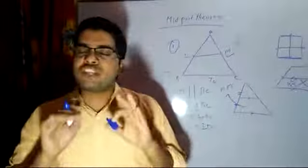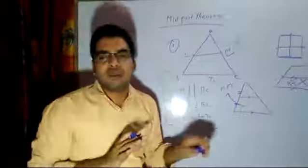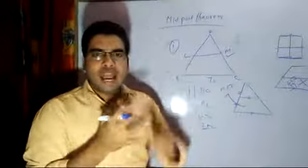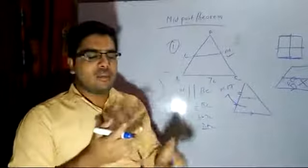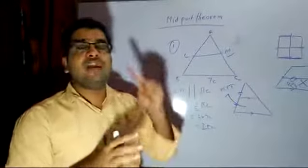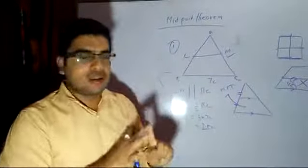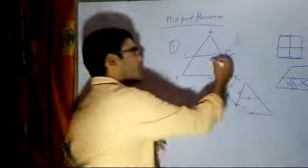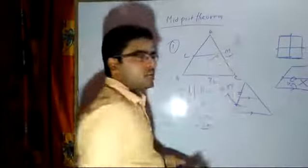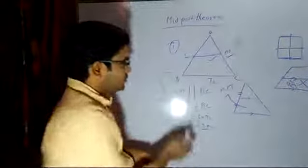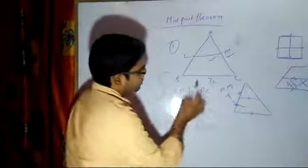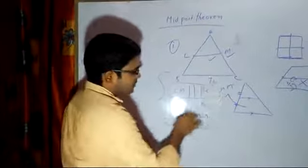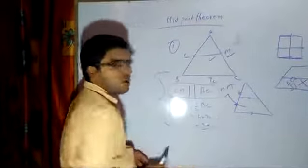Whatever type of triangle it may be — whether it be a right angle triangle, an isosceles triangle, a scalene triangle, or an equilateral triangle — in all types of triangles you can apply this midpoint theorem, which states that LM will be parallel to the third side and LM will be half of that side.